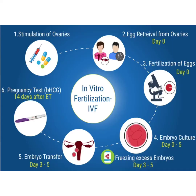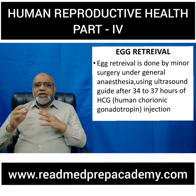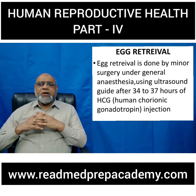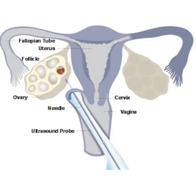First, stimulation of the ovaries is done, then the ovum is retrieved. Fertilization of the eggs is done on the same day. Embryo culture is done once the zygote is formed, from day 0 to day 5. When excess embryos are formed, these are cryopreserved from day 3 to 5. The embryo is then transferred into the uterus, and after 14 days a pregnancy test is done. Egg retrieval is performed by minor surgery under general anesthesia using ultrasound guidance, 34 to 37 hours after HCG (human chorionic gonadotropin) injection. A needle is inserted through the vagina — through the left fornix for the left ovary or the right fornix for the right ovary — and the ovum is retrieved.